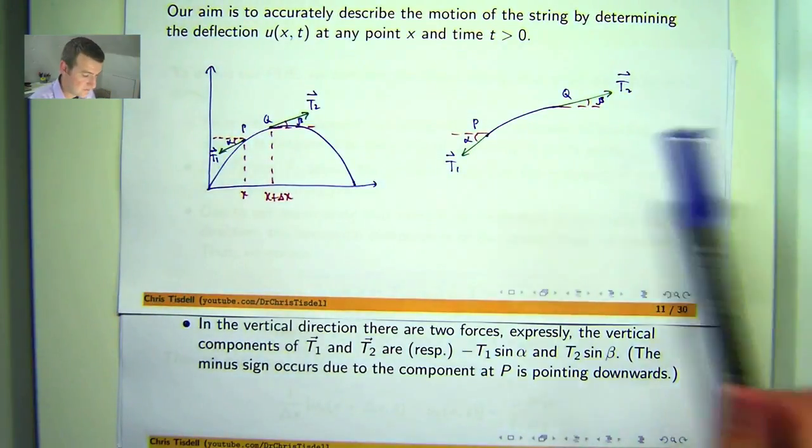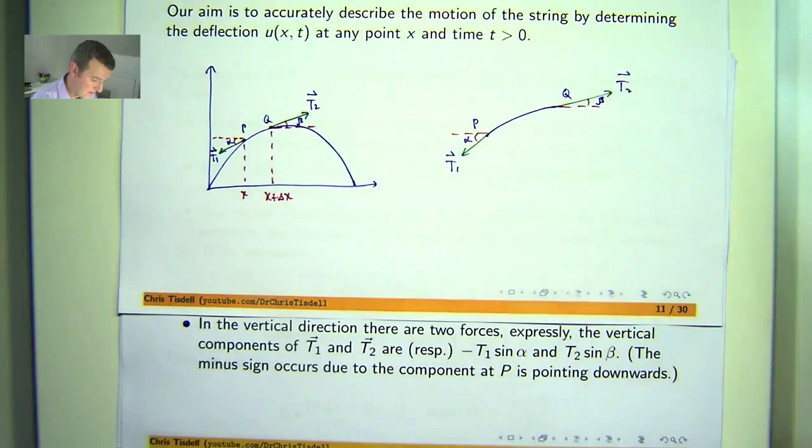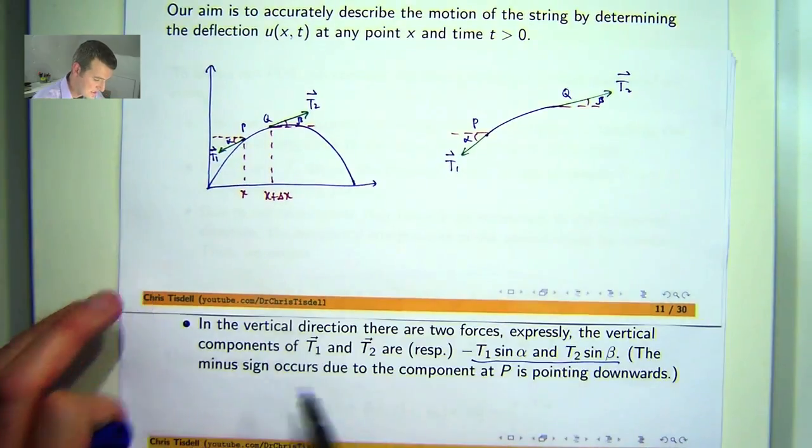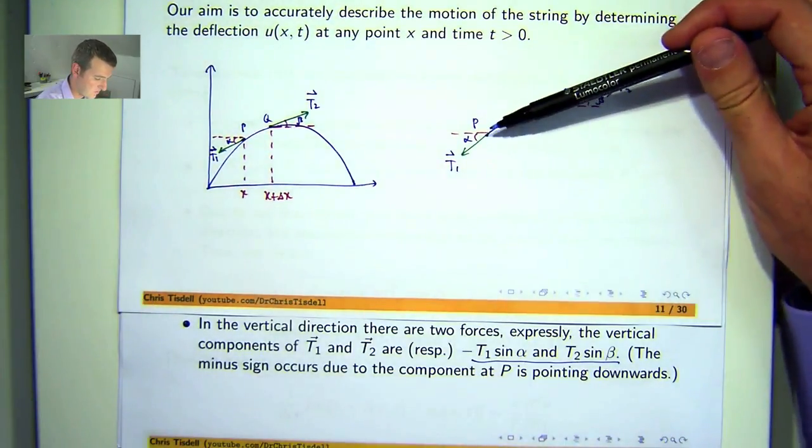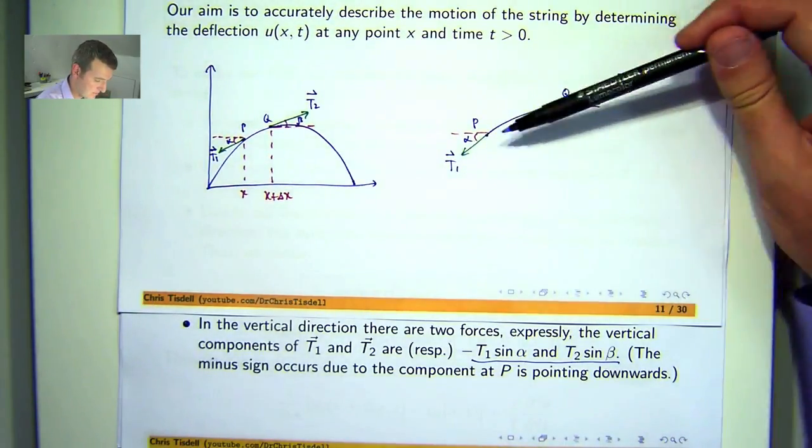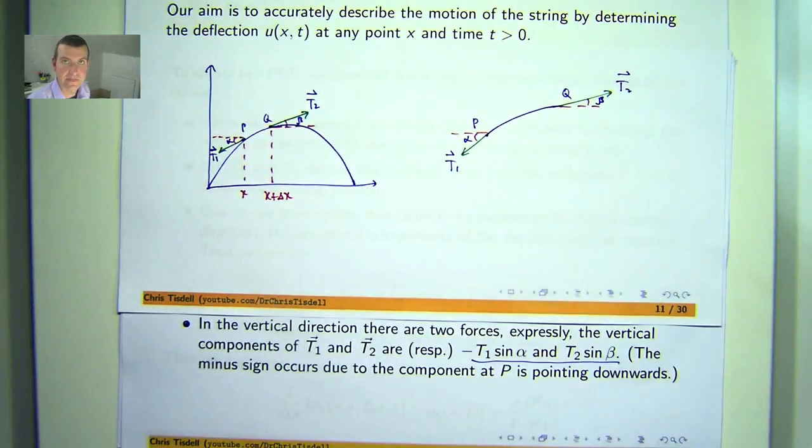Now, in the vertical direction, there are two forces: the vertical components of this vector and this vector. If you do a little bit of trig, where you've got the angles alpha and beta, you can show that the vertical components of these two tension forces are here. The negative sign on the first one is just due to the component at p pointing downwards.